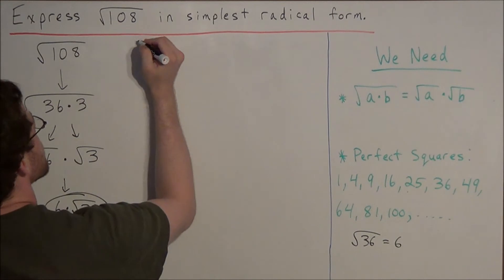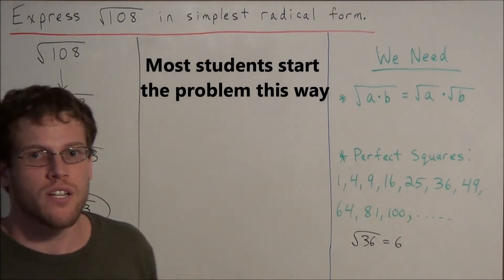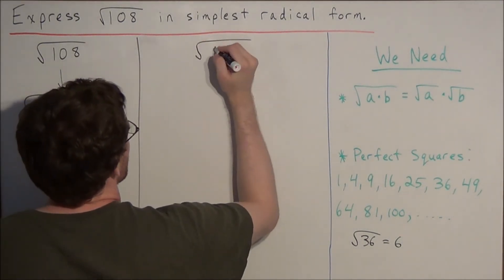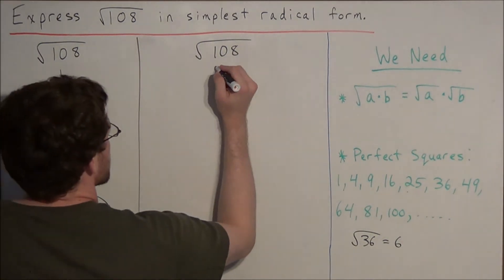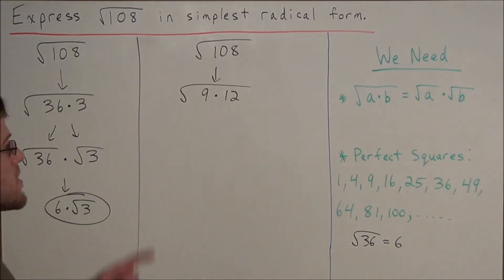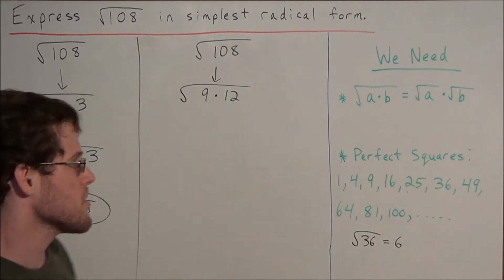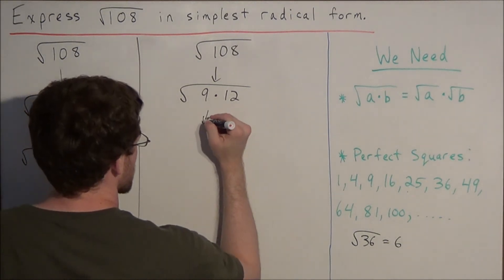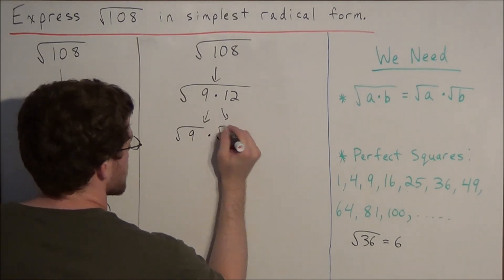Now let's say we didn't know that 36 was the greatest perfect square factor, and instead we chose 9. We can rewrite this expression: the square root of 108 broken down into 9 times 12, so we have the square root of 9 times 12 underneath the radical sign. This is more reasonable since factoring with 36 can get a bit tricky. Using the product property, we break this apart into the square root of 9 times the square root of 12.